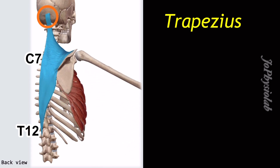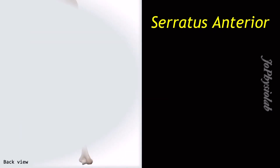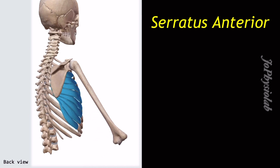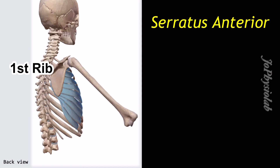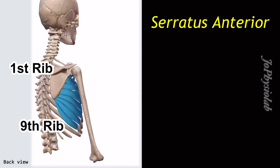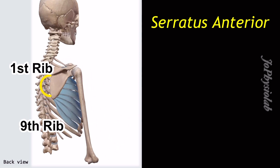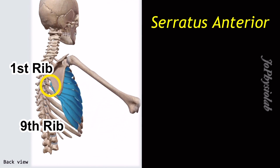The trapezius inserts from the lateral third of the clavicle to the acromion and spine of the scapula. The serratus anterior muscle attachment begins from the first rib to the ninth rib, and it inserts at the medial border of the scapula.